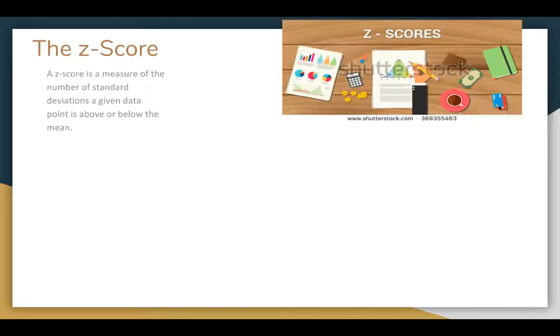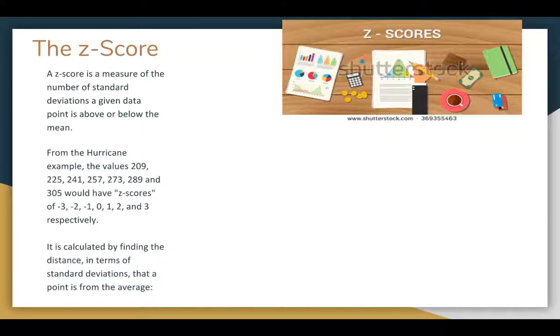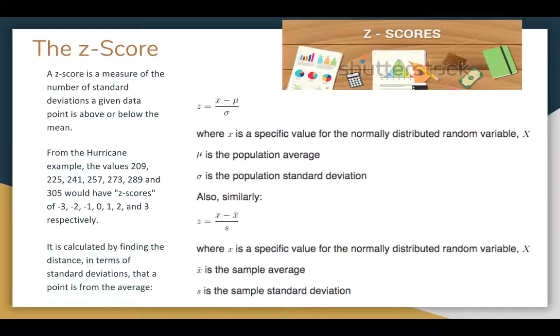So the z-score is a measure of number of standard deviations above or below the mean. So when we talk about that number, what's the number that's 16% above, that was a z-value of 1. So 209 to 305 would be negative 3 to 3 for that example. It's calculated by finding distance in terms of standard deviations that a point is from the average. So this is the formula.